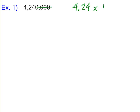Let's practice. I have the number 4,240,000. Following our steps, we keep the 4, write a decimal, and follow with the remaining non-zero digits: 2 and 4 — we don't need the trailing zeros. We multiply by base 10. Since this is a large number, our exponent is positive. Counting the places: 1, 2, 3, 4, 5, 6 — it moves six places, giving us 4.24×10⁶.